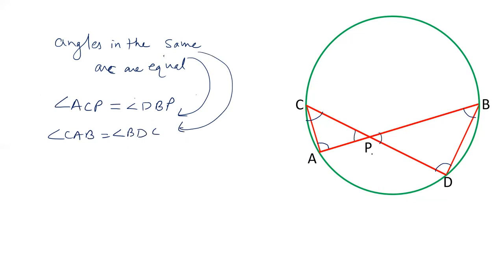Angle APC and angle DPB are equal, vertically opposite angles. Though there is no need to prove this because even if there are two angles equal, triangles will be similar.